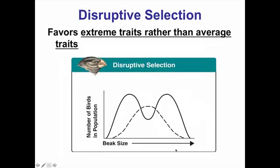Finally, we have disruptive selection. In disruptive selection, this is going to favor the extremes rather than the average. In this case, this is different from directional. It favors both extremes.